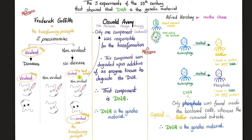Third experiment: Alfred Hershey and Martha Chase. They used the bacteriophage — bacterio means bacteria, phage means to eat. It's the virus that invades and attacks bacteria. The genetic material of the virus enters the bacteria, but the capsid remains outside. They labeled the bacteriophage with sulfur — sulfur is found in proteins like the capsid, but not in DNA. Then they labeled another bacteriophage with phosphate — and phosphate is found in DNA. When they let the bacteriophage attack the bacteria, only the phosphate was found inside the bacteria while the sulfur remained outside.